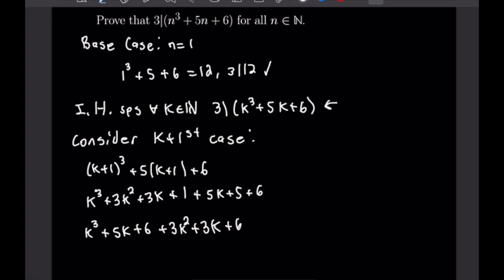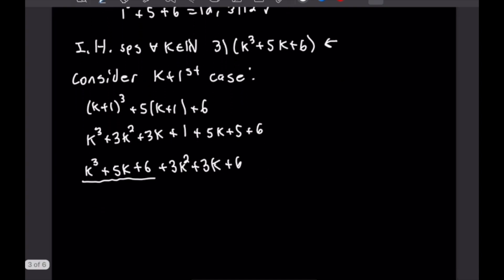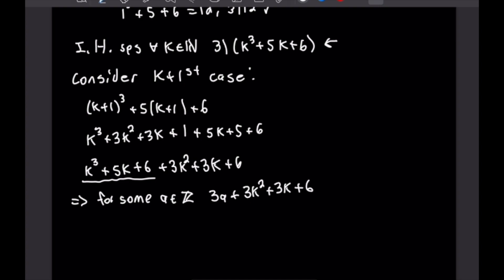By our induction hypothesis we know that 3 divides k cubed plus 5k plus 6. By the definition of divisibility we can write it as 3 times some integer a. That means we have 3a plus 3k squared plus 3k plus 6. We can factor a 3 out of the entire expression, giving 3 times the quantity a plus k squared plus k plus 2. This proves that 3 divides the expression, completing this proof.